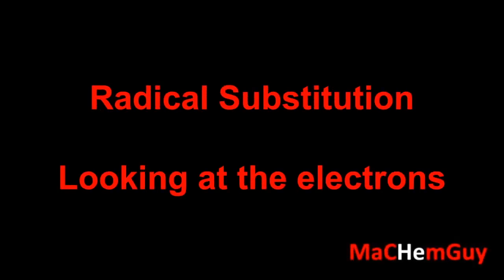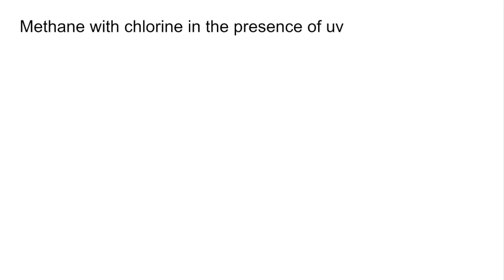In this video I'm going to look at radical substitution, but I'm going to be looking at the electrons. So we'll use the classic example, methane with chlorine in the presence of UV.